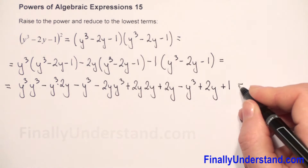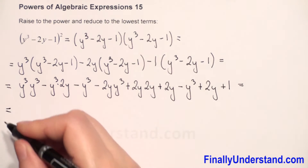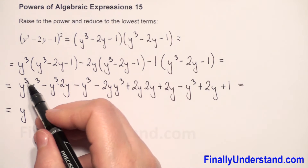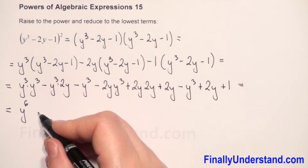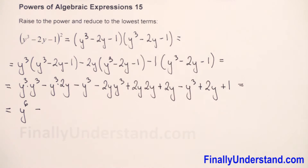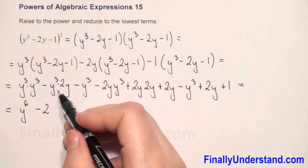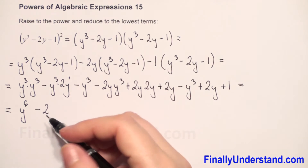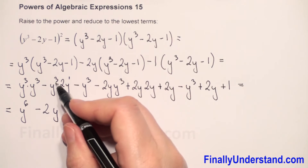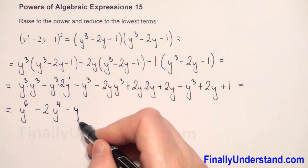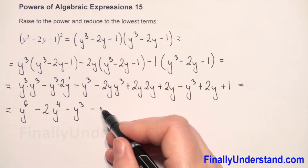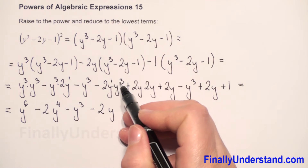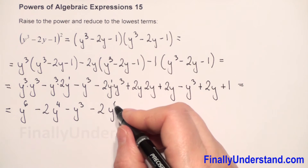The positive y³ becomes negative y³, the negative becomes positive 2y, and the negative becomes positive 1. Now for the multiplications: same-base multiplication means we copy the base and add exponents. 3 plus 3 is 6. Next, negative, and we have y³ times y to the first power — since no written power is always 1 — so 3 plus 1 equals 4. Also negative y³ times 2y: exponents 1 and 3, so 1 plus 3 equals 4.